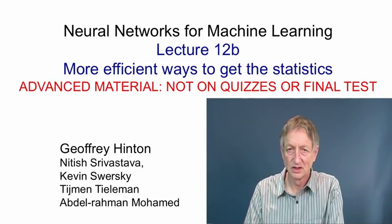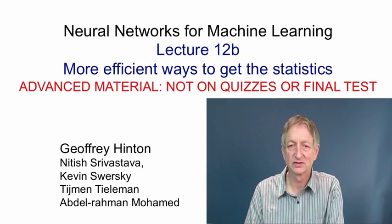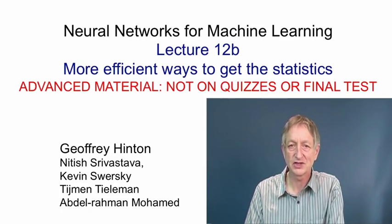In this video, I'll go into more detail about how we can speed up the Boltzmann machine learning algorithm by using cleverer ways of keeping Markov chains near their equilibrium distribution, or by using what are called mean field methods. The material is quite advanced and so it's not really part of the course. There won't be any quizzes on it and it's not on the final test. You can safely skip this video. It's included for people who are really interested in how to get deep Boltzmann machines to work well.